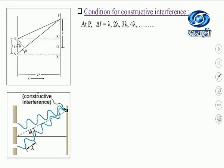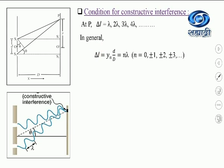For constructive interference to take place at point P, the path difference between the two waves, which is delta L, should be equal to lambda, 2 lambda, 3 lambda, 4 lambda, and so on. In general, we can write the path difference delta L for the nth bright fringe as equal to yn times d by d, where yn is the distance of the nth bright fringe from the central bright point. That path difference should be equal to n lambda, or it is an integral multiple of wavelength lambda, where n takes the values 0, ±1, ±2, ±3, and so on.